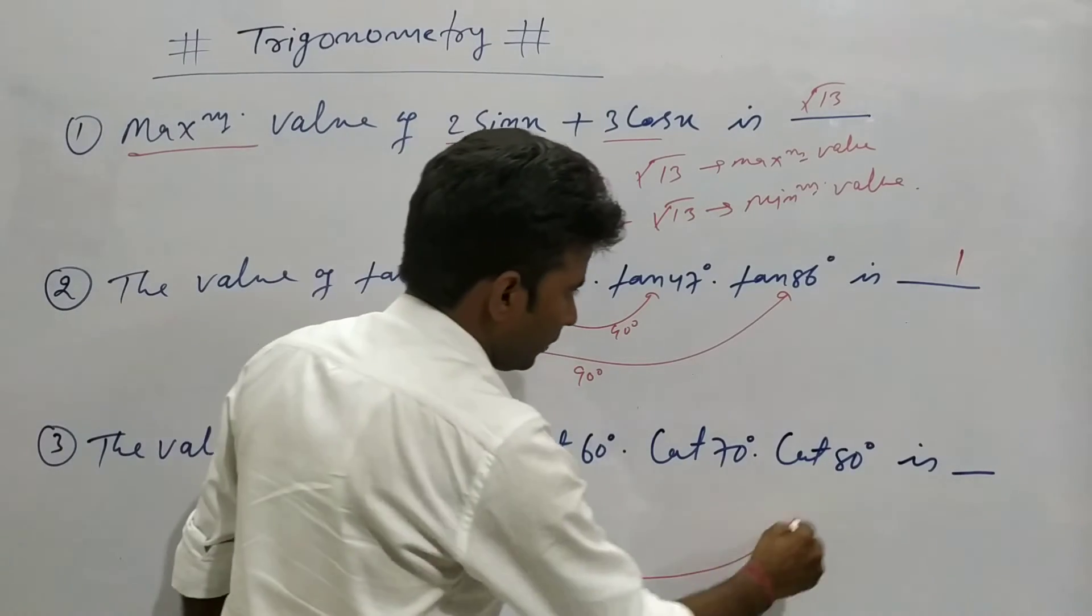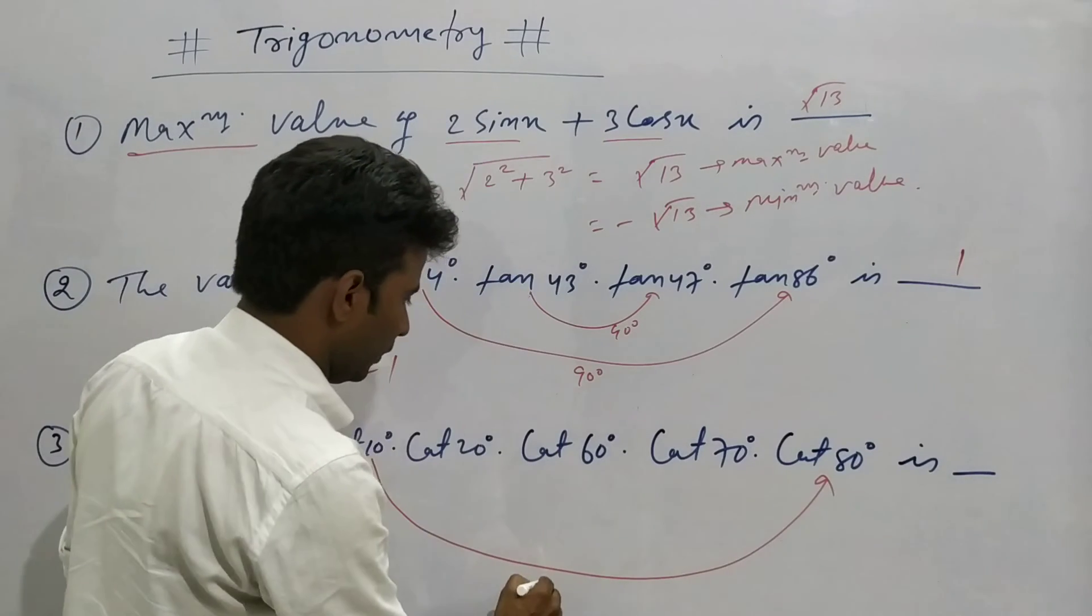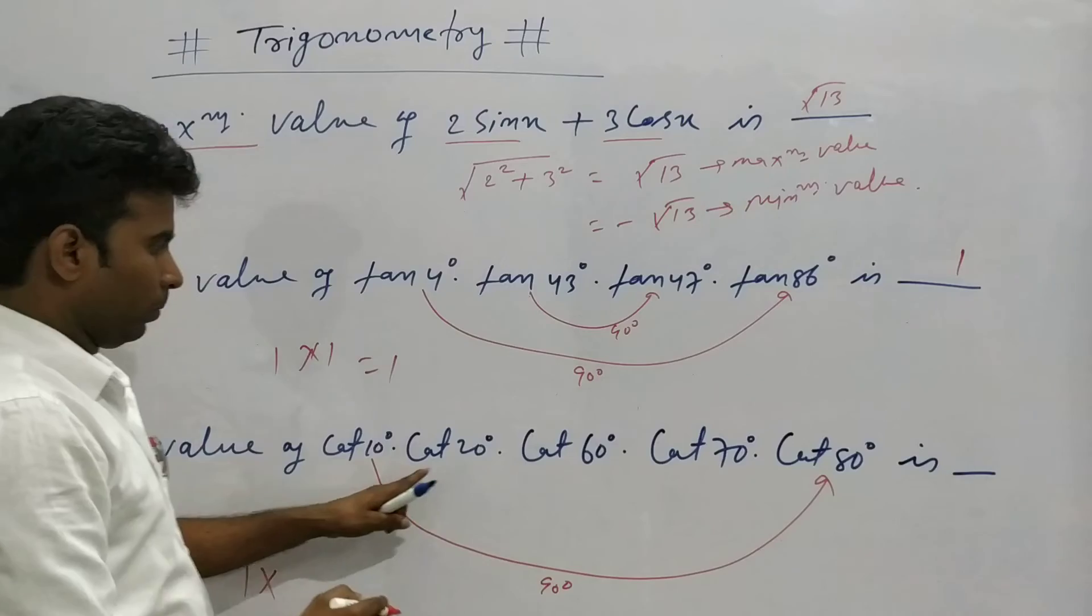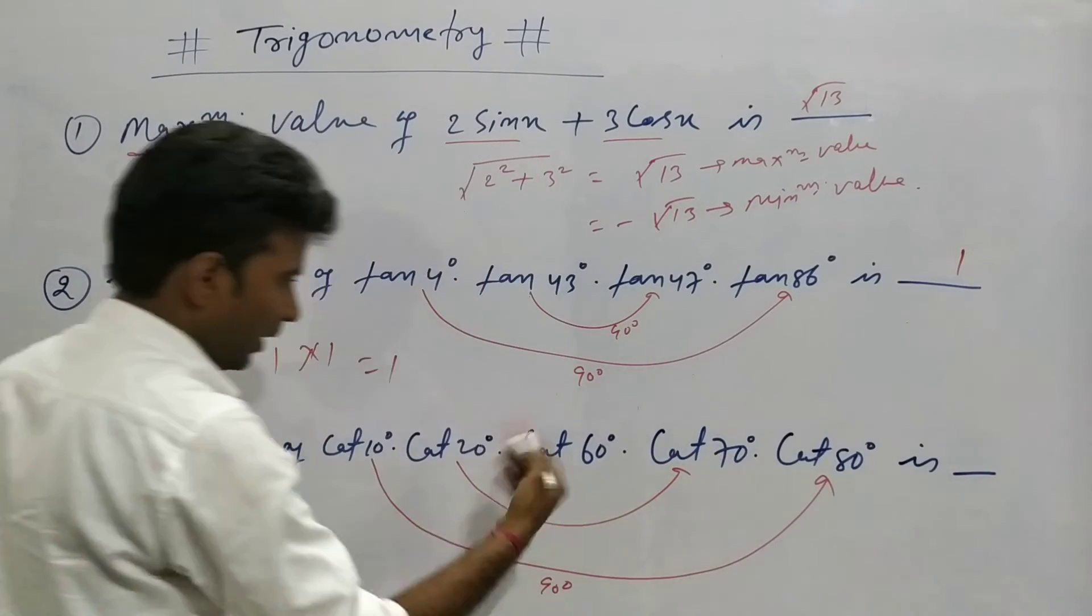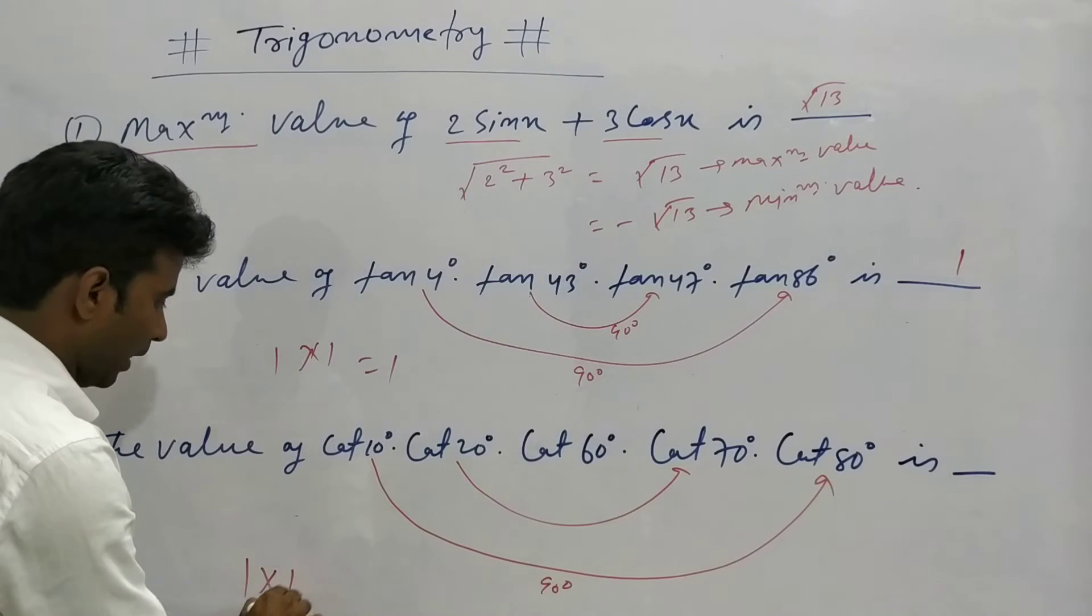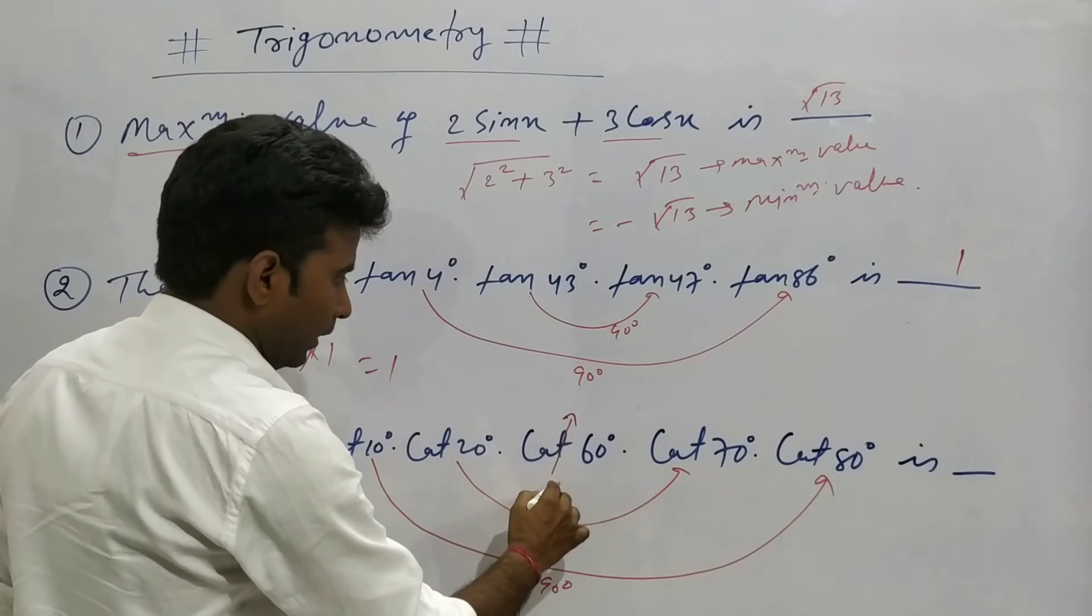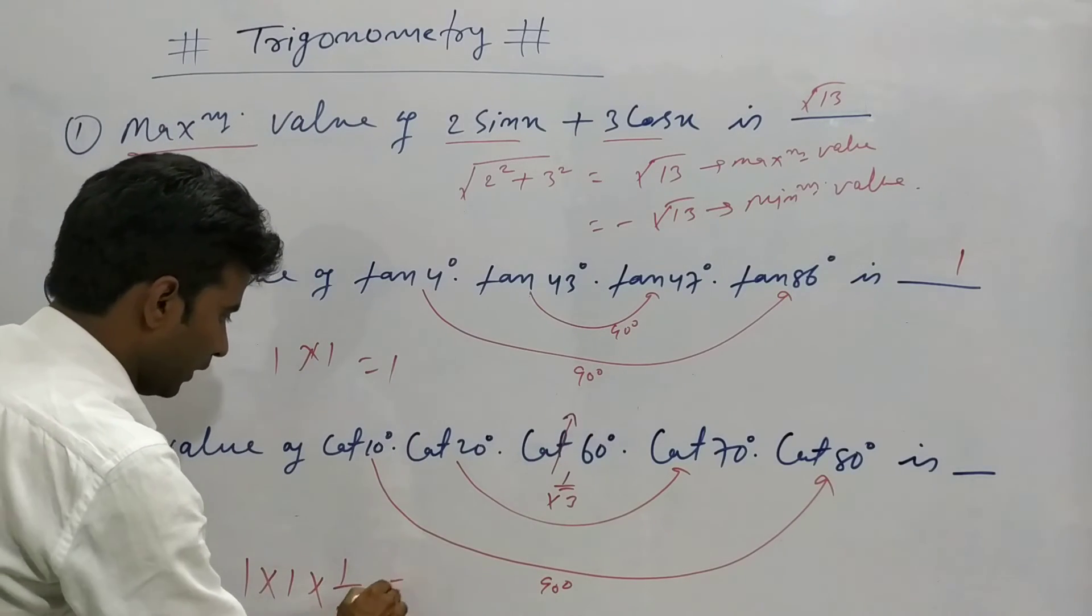10° and 80° add to 90°, so their product is 1. Similarly, 20° and 70° add to 90°, so this value is also 1. Then we have cot60° which equals 1/√3. Multiplying: 1 × 1 × 1/√3 equals 1/√3.